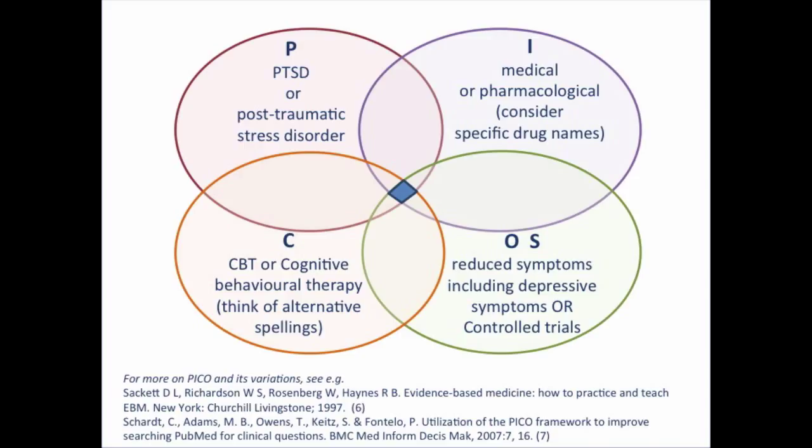The thing to remember is you shouldn't feel obliged to use the structure slavishly. Think about the relevance to your question and adapt or adopt as you feel is most appropriate. Just to explain about the diagram — why I've used the overlapping circles, or the Venn diagram, to illustrate the PICOS components. I will be combining interchangeable terms, such as the abbreviation PTSD and its full spelling, using the combining operator OR. So into each circle, you can cluster synonyms, related terms, or alternative spellings.